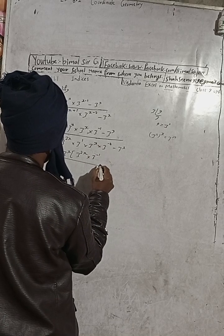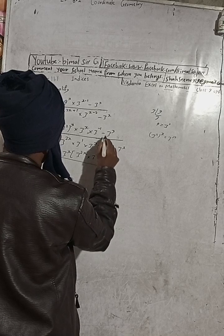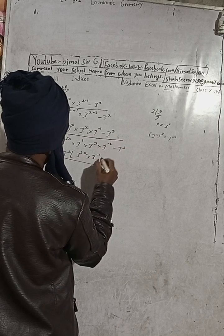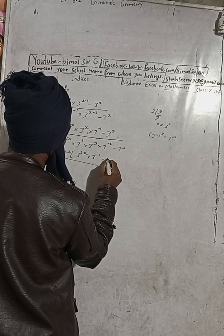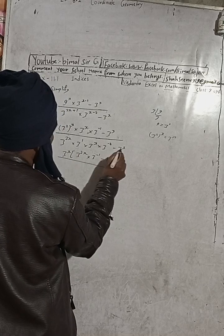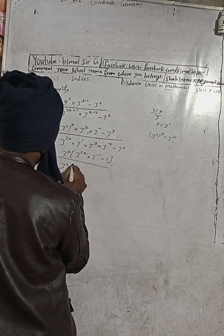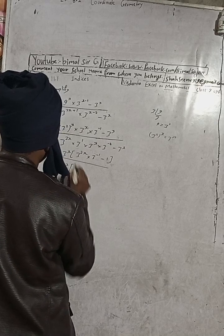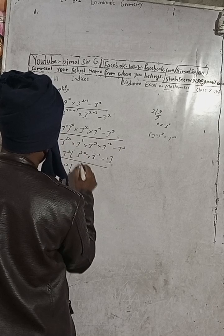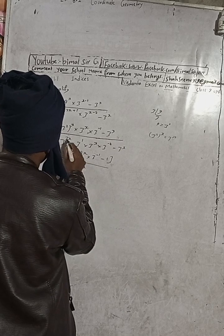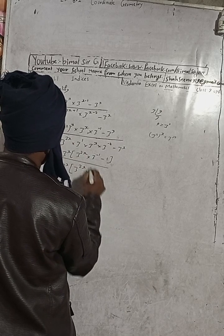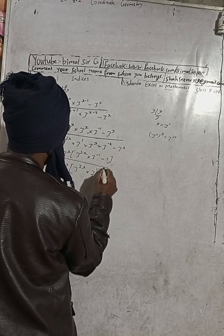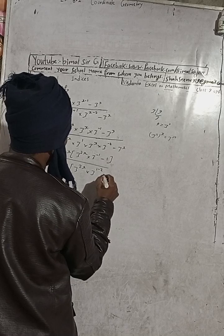And then, what is here? Minus. So this is taken outside. In the same way, 3 to the power x is common, and remaining is 3 to the power 2x. And this is 3 to the power, see that this is 1, this is minus 2, and then this minus.